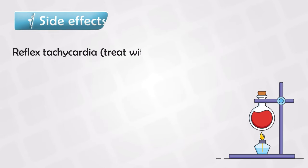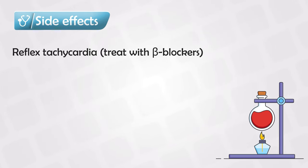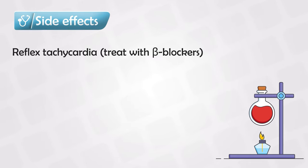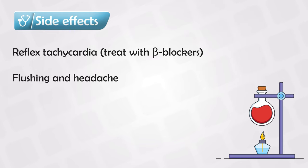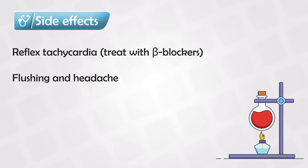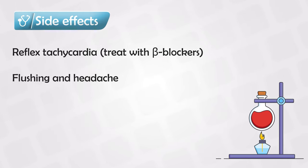The side effects include reflexive tachycardia — just like with hydralazine — and just like with hydralazine, it is also treated with beta blockers. Other side effects include hypotension, especially at higher doses; flushing, which is caused by dilation of the arterioles in the skin; and headache, which is caused by dilation of the arterioles in the meninges.